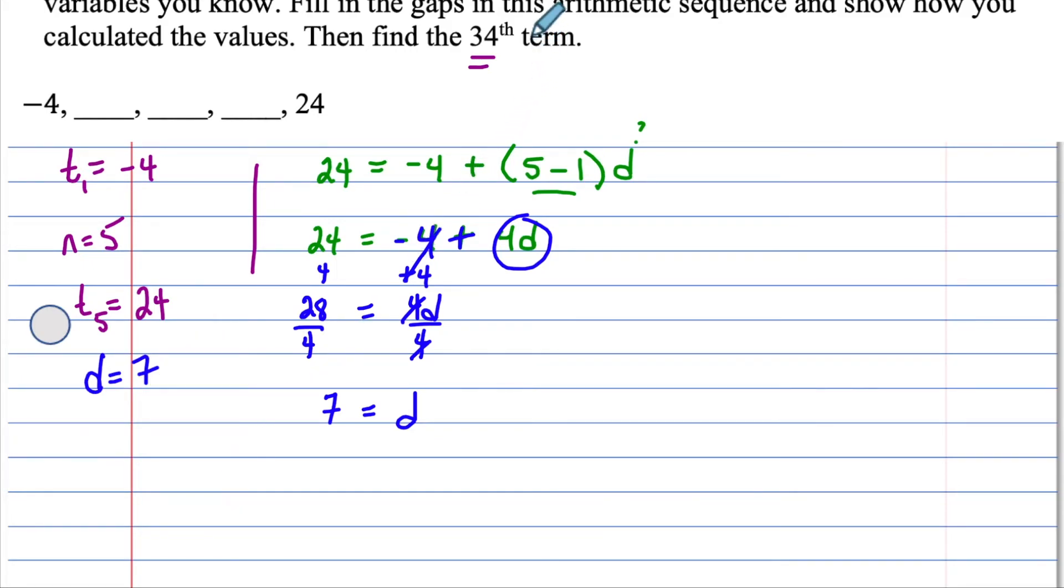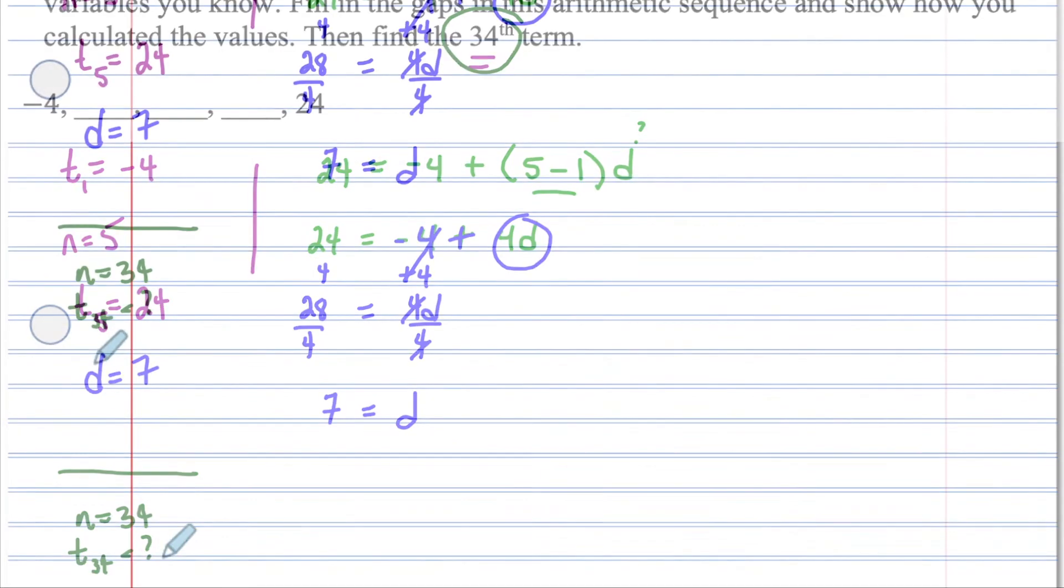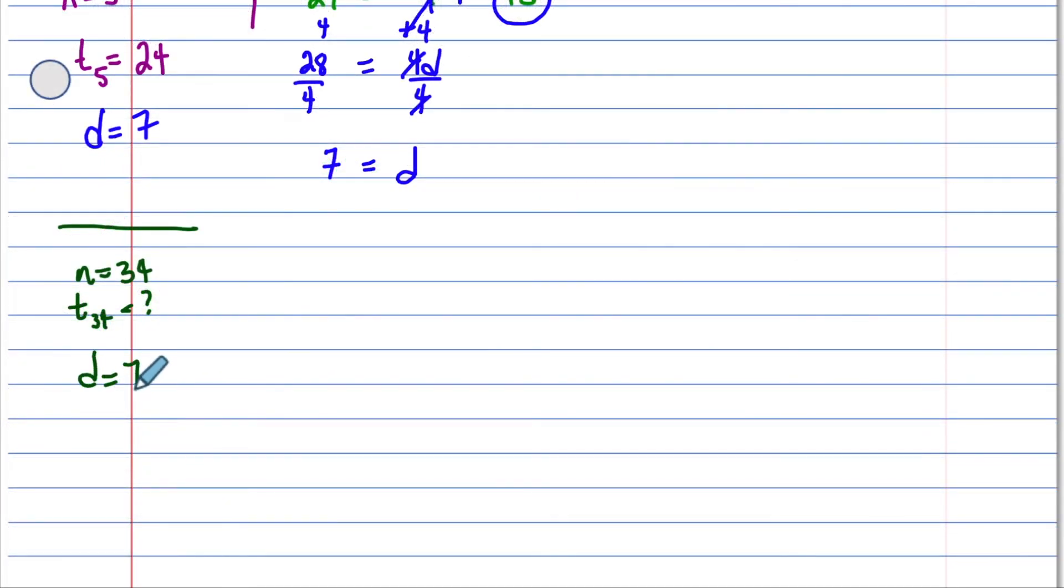Now let's find that 34th term. That means N now is 34. We want to find the value of T of 34. We know that D is 7, and we know that our first term is negative 4. We're on our way. We have three variables, one unknown. Let's plug it in. T of 34 is what we're looking for, that value. Order of operations.